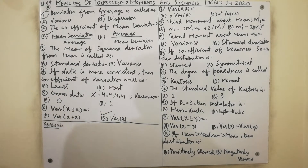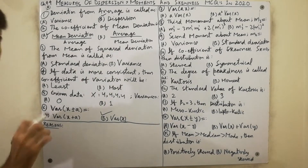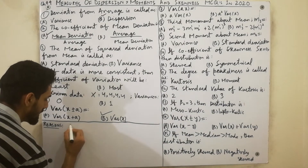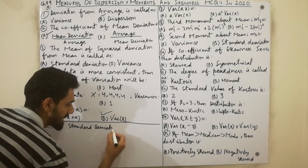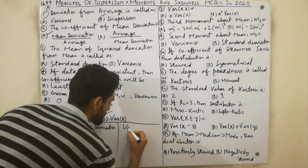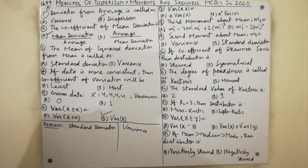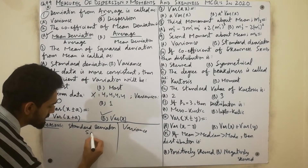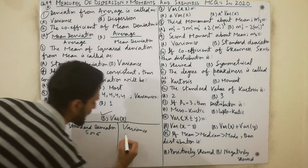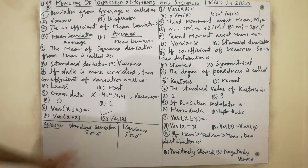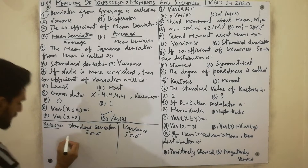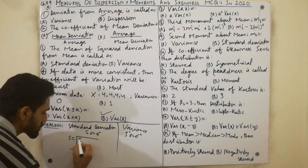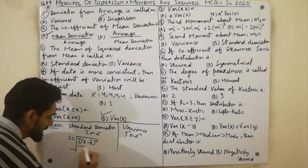Moving to the third MCQ, let me first clarify the concept of standard deviation and variance. Standard deviation is denoted by s or sigma, and variance is denoted by s-squared or sigma-squared. The formula for standard deviation is equal to the square root of the summation of (x minus x-bar) squared.